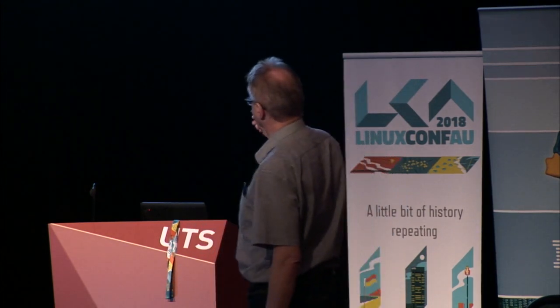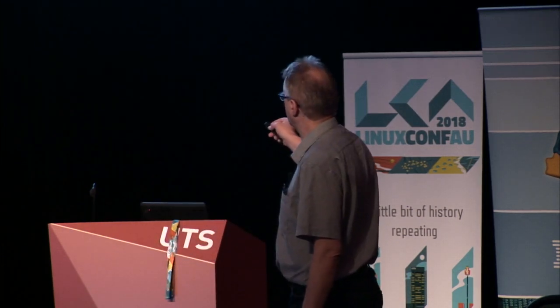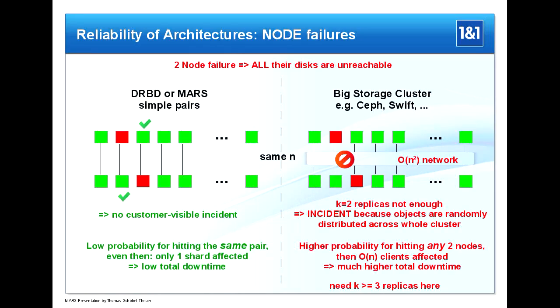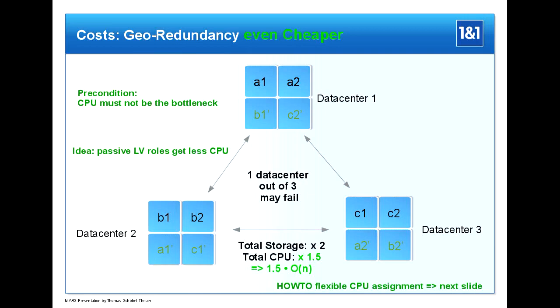Depending on whether you argue with the size of the incident, you can come to different conclusions. My assessment is that the sharding architecture is the simplest and even the lowest cost, because with this sharding model you don't have a replication storage network at all and you're halving the number of servers.